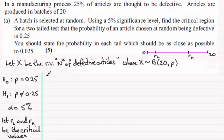Now what I'm going to say is that we would reject the null hypothesis if the probability of the number of defective articles represented by the random variable X here being less than or equal to this lower critical value, RL, given that the null hypothesis is true, in other words, that P equals 0.25, is roughly around 0.025. We've got to look for a value close to that.